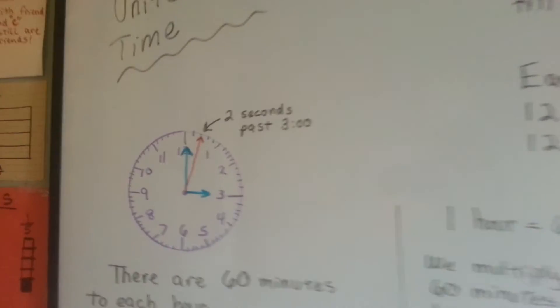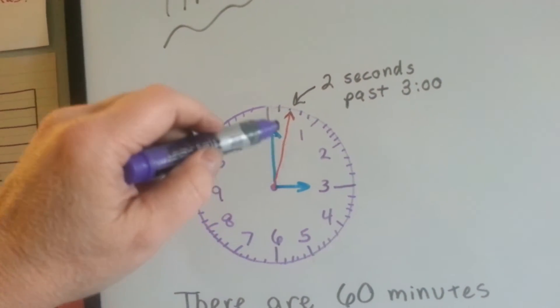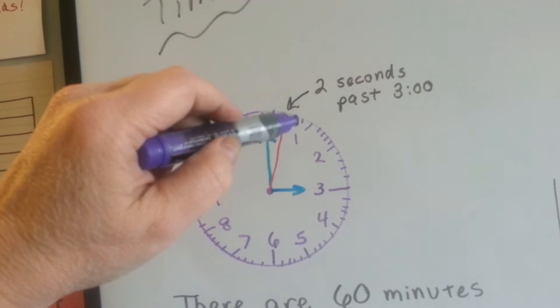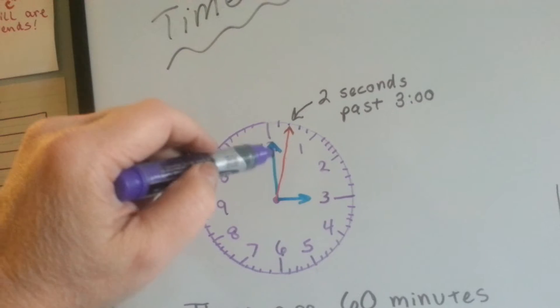When you look at an analog clock and you look at the long skinny little second hand, every time it hits a little line, that's a second. This would be 2 seconds past 3 o'clock.